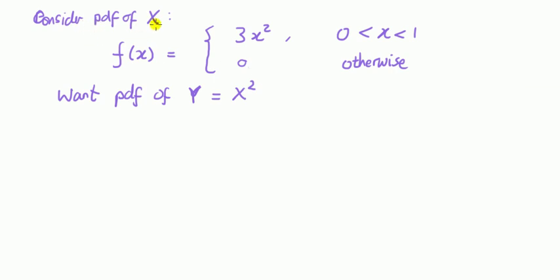Consider a continuous random variable x which has the PDF here. We want the PDF of a transformation of that random variable x, in this case x squared. How do we get it?